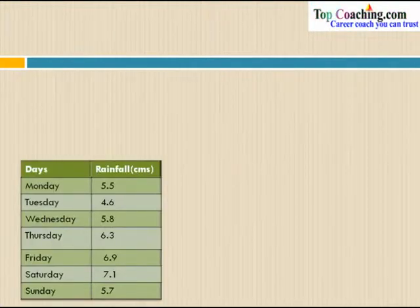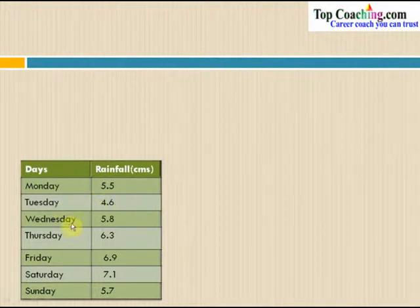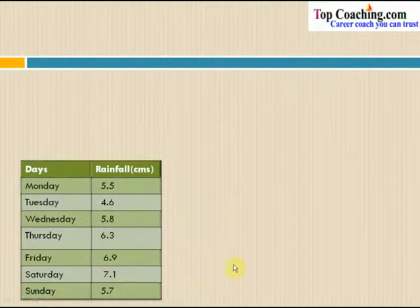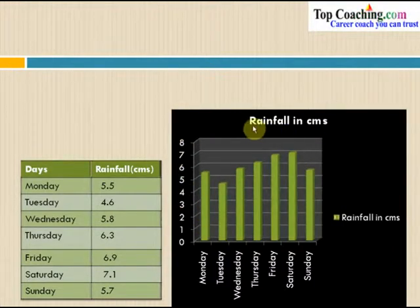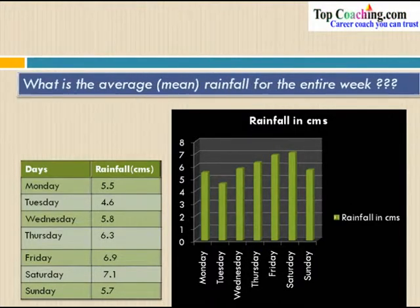Let us say that we have a table that gives us the amount of rainfall that occurred throughout the week. On Monday it was 5.5 cm, Tuesday 4.6 cm, Wednesday 5.8 cm, Thursday 6.3 cm, Friday 6.9 cm, Saturday 7.1 cm, and Sunday 5.7 cm. Let's try to plot this in a graph — it represents the amount of rainfall in these particular days of a week. Now, what is the average rainfall for the entire week?